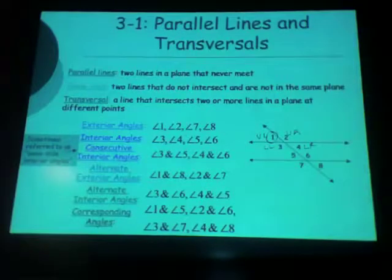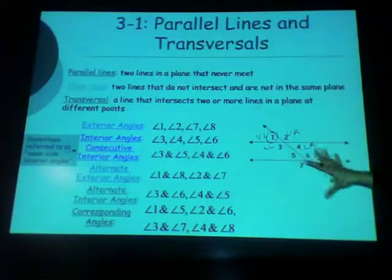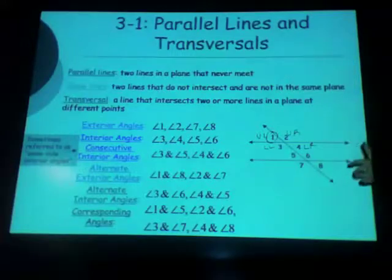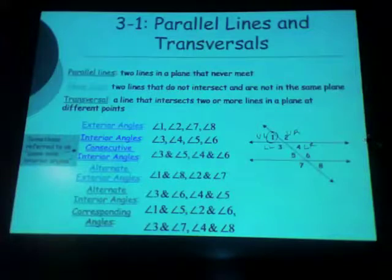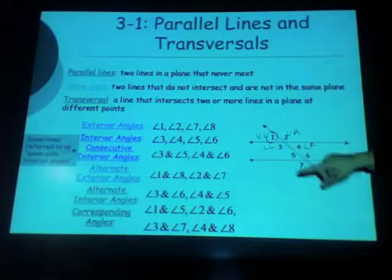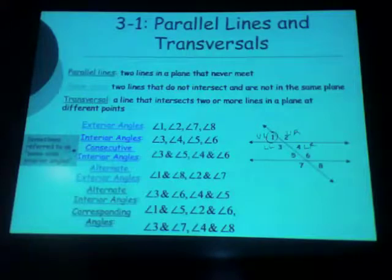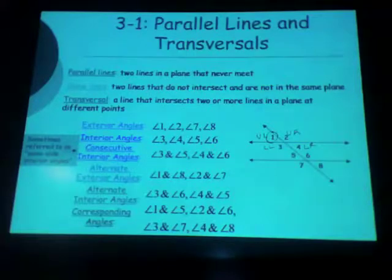Make sure you write down all four pairs. I would put this on a flash card — have this picture on the front with a word like exterior angles, and on the back put the exterior angles. You should have about six cards from this picture. It's incredibly important that you know when I say exterior angles, or alternate interior angles, what I'm talking about — because in a minute they're going to have some relationships.